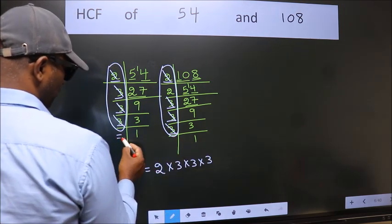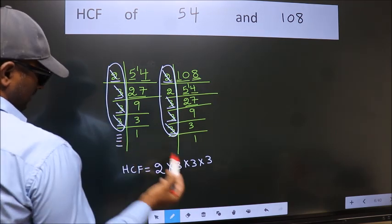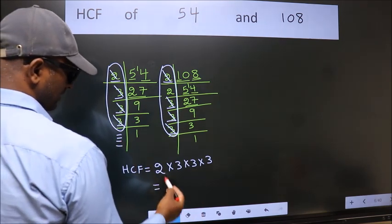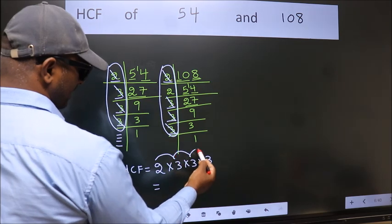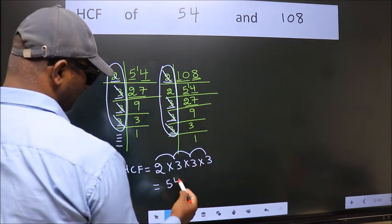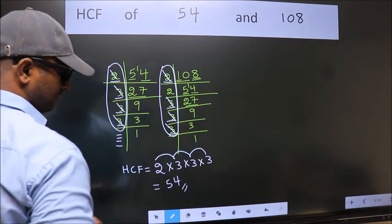No more numbers have been left out. So, our HCF is 2 times 3, 6 times 3, 18 times 3, 54 is our HCF.